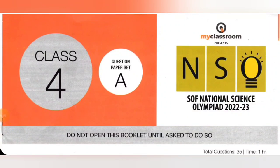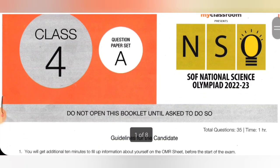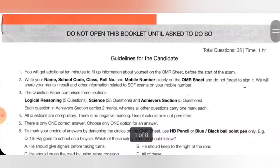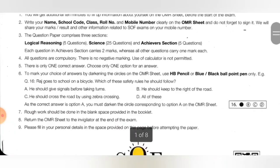Hi my dear kids, welcome to Easy Learn Funny Learn. In this video, we are going to see NSO 2022-2023 Class 4 Set A question paper. In this question paper, the total questions are 35, total time 1 hour. Logical reasoning: 5 questions, each carries 1 mark. Science: 25 questions, each carries 1 mark. Achievers section: 5 questions, each carries 2 marks. Since you are Grade 4, you have to shade using HB pencil on the OMR sheet. Come, let's see the questions.